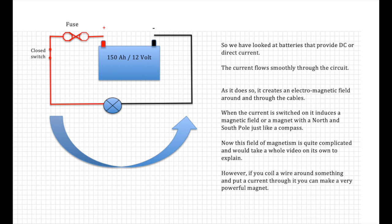Now this field of magnetism is quite complicated and would take a whole video on its own to explain. However, if you coil a wire around something and put a current through it, you can make a very powerful magnet. Every school child knows if you push the two south poles together they repel, or the two north poles. But if you put the north and the south together they attract. That's actually how starter motors work. But we'll go into that later.